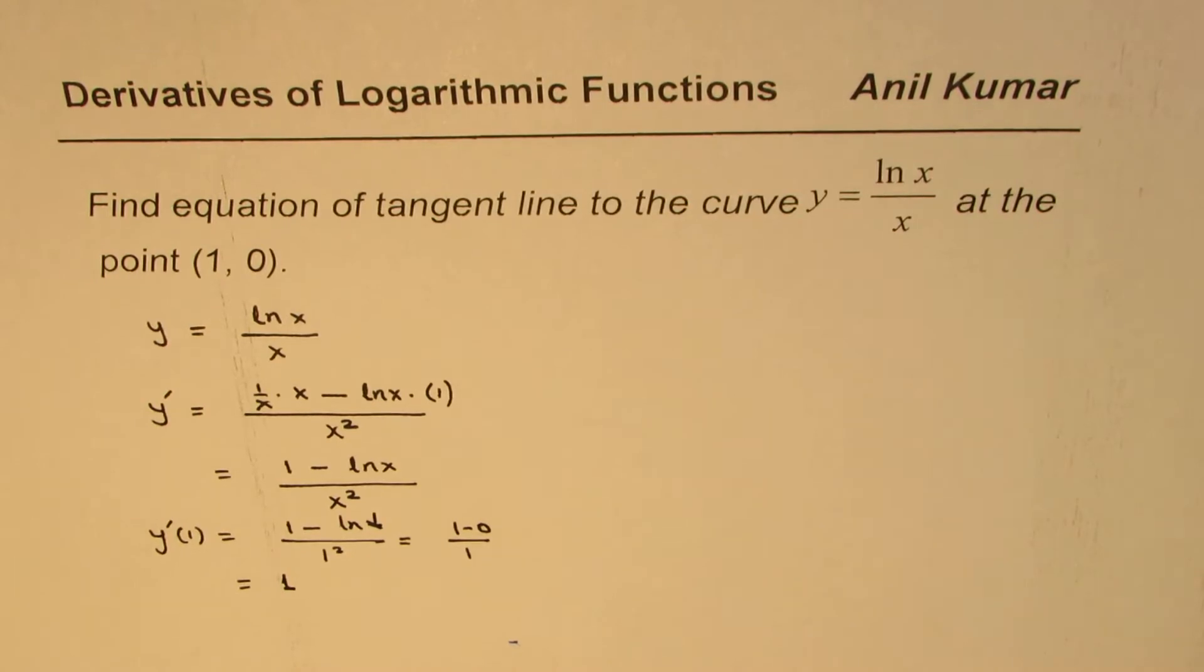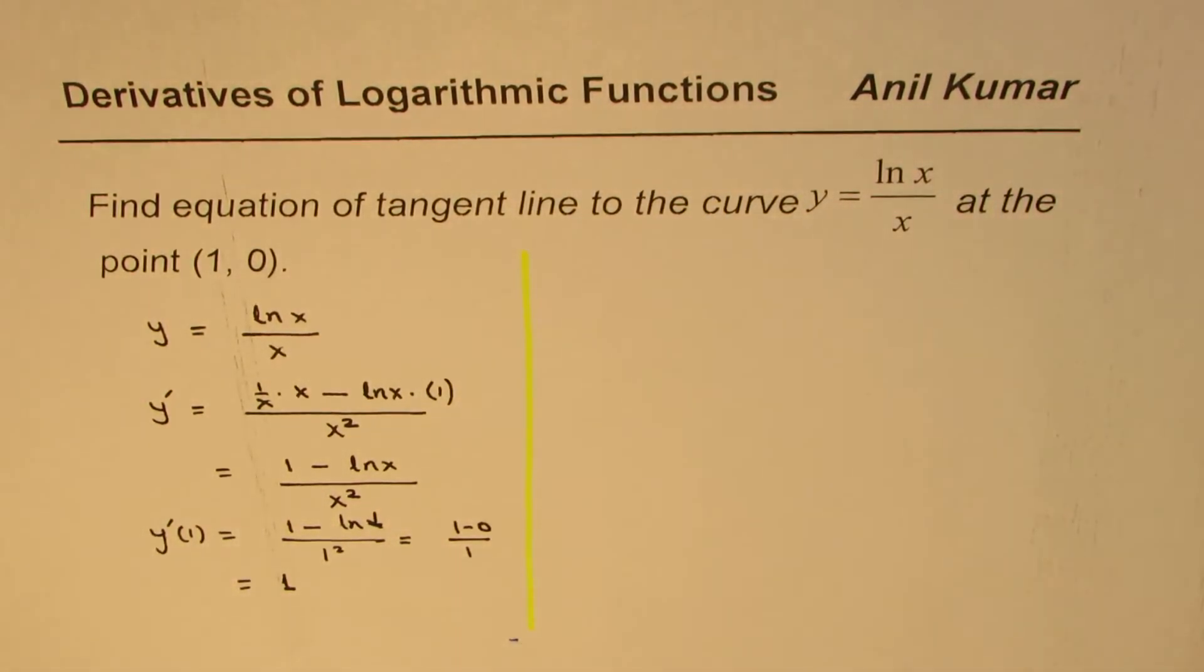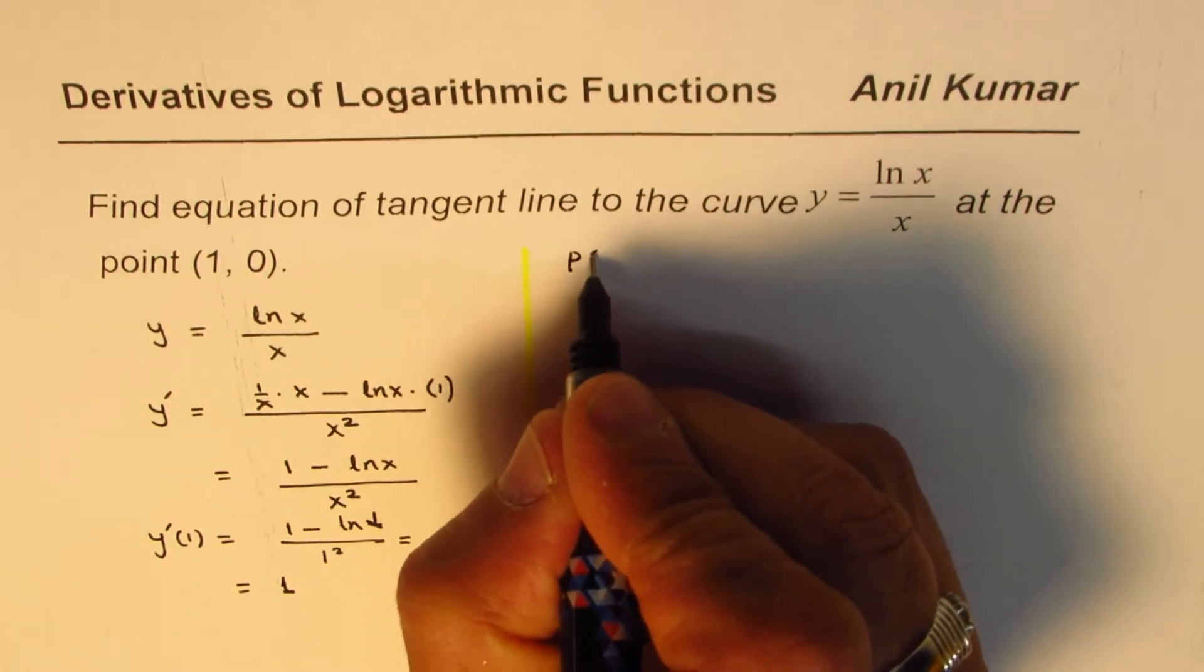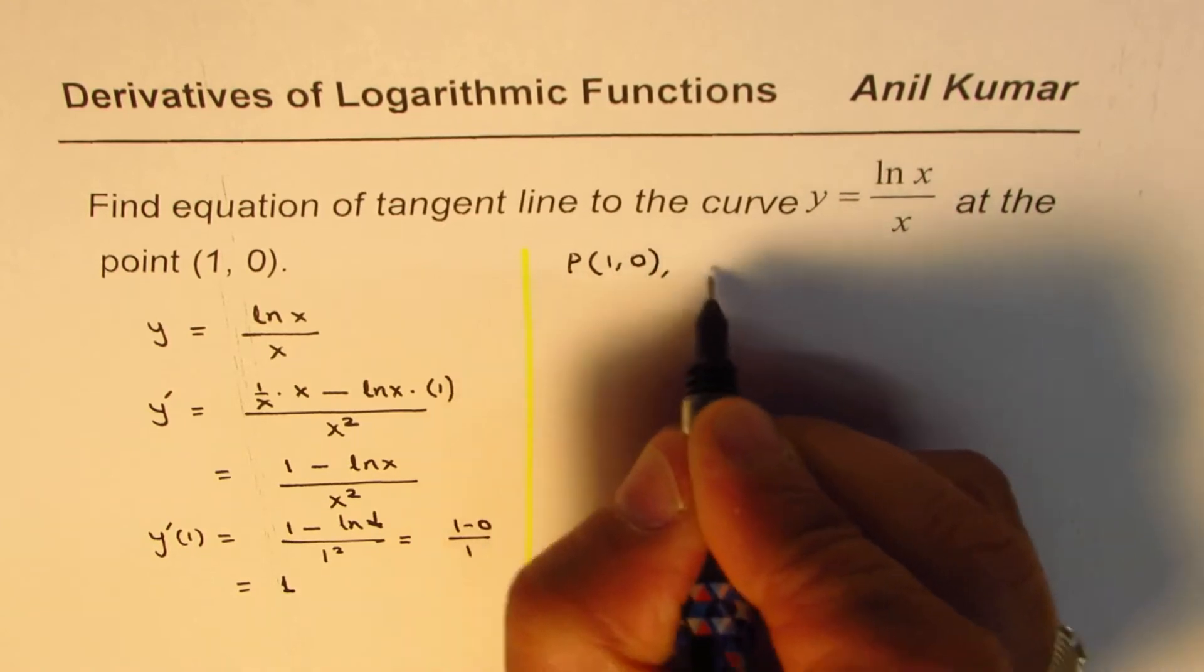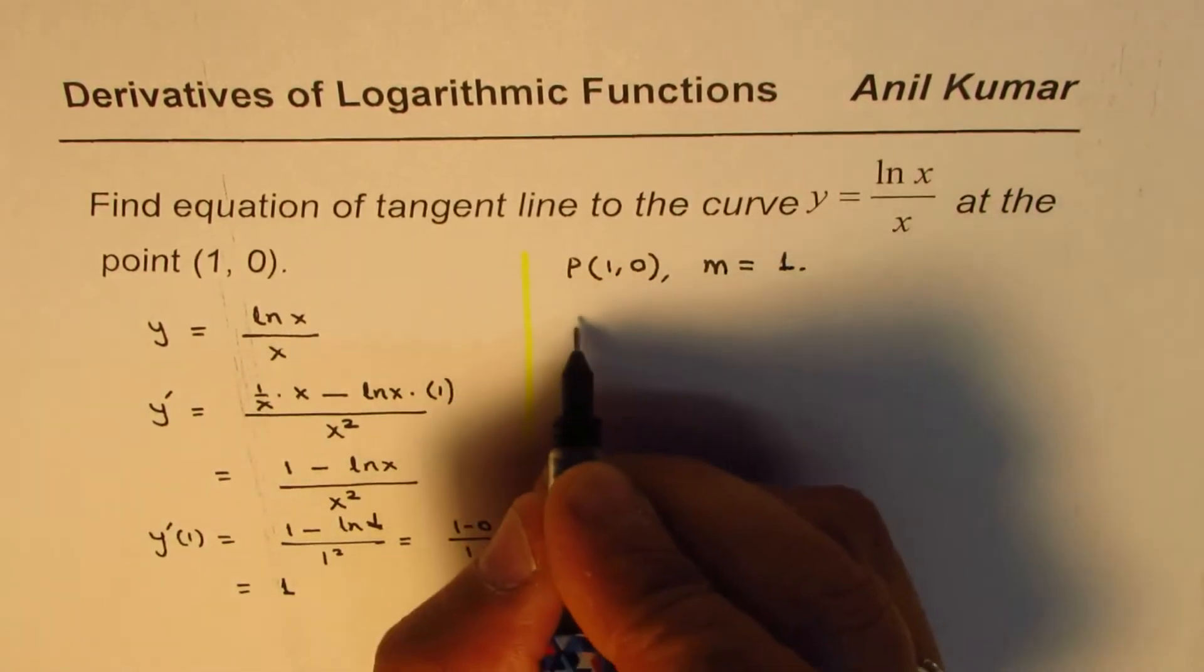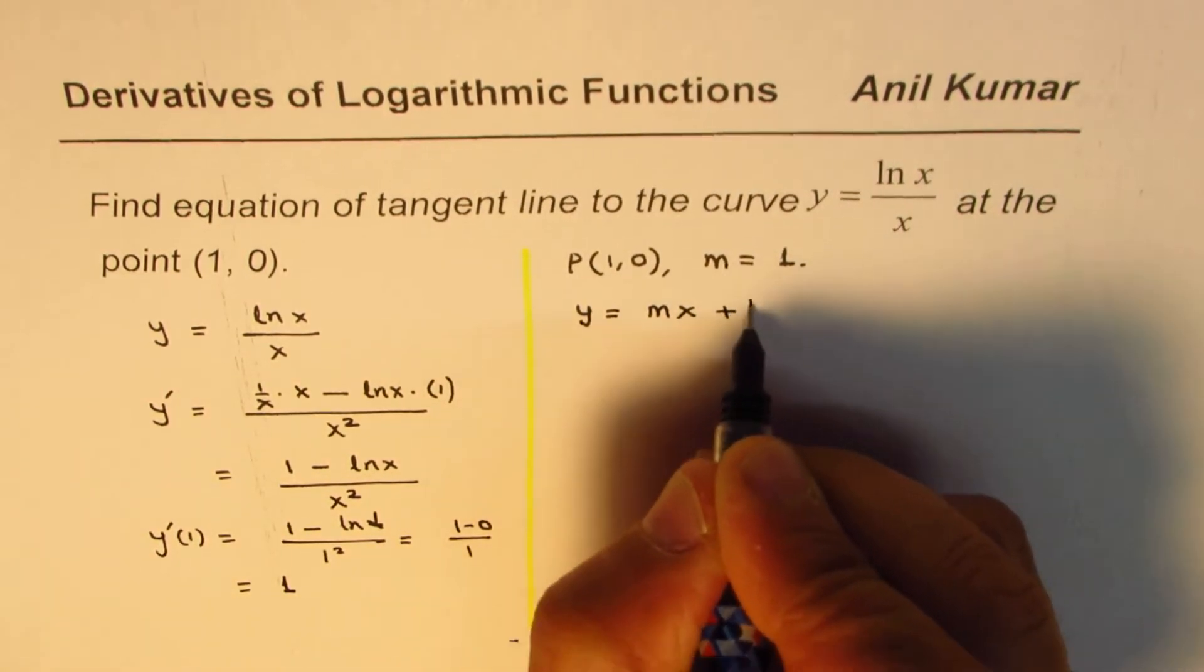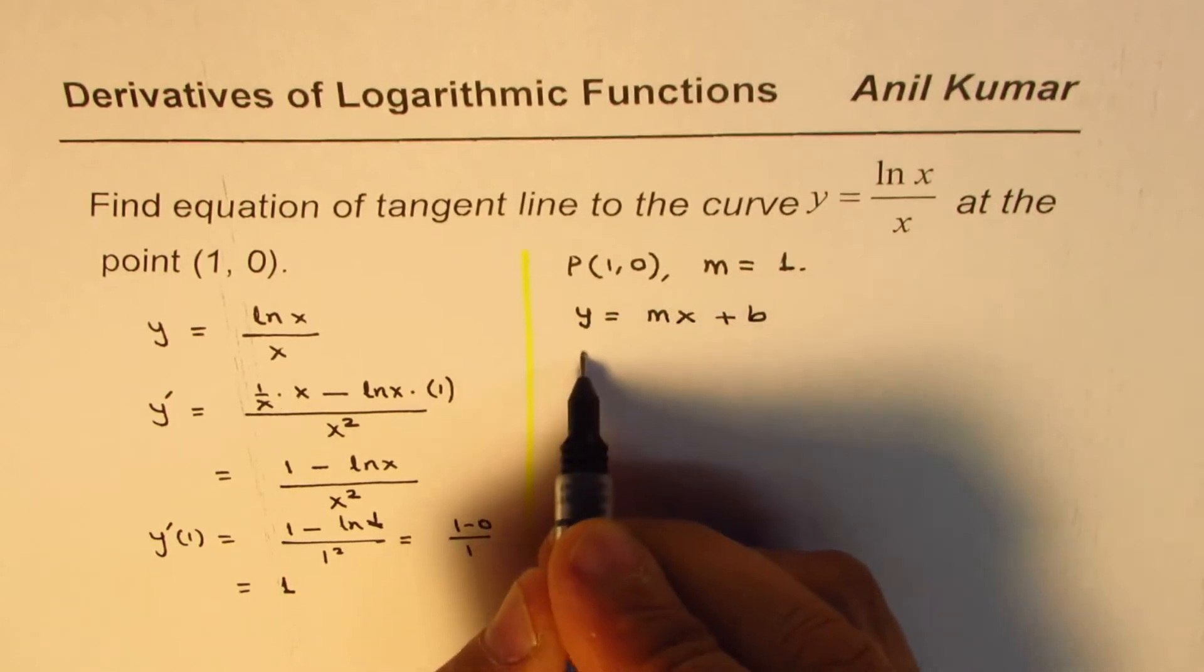To find the equation of the tangent line at a given point, we know that the point given to us p is (1, 0), slope m at this point is 1. So the equation could be y equals mx plus b. We know y is 0,